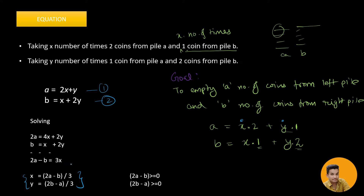The important result is: if the numerator is a multiple of three when solving for x and y, then we are finishing off the piles. Both x and y must be positive multiples — not negative — because we are taking a positive number of times either two coins from one pile and one from the other. If we are able to do so, we will be able to empty the piles.